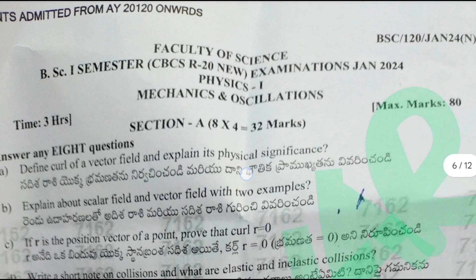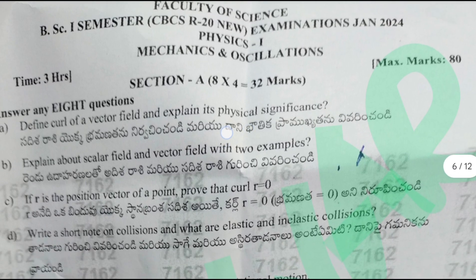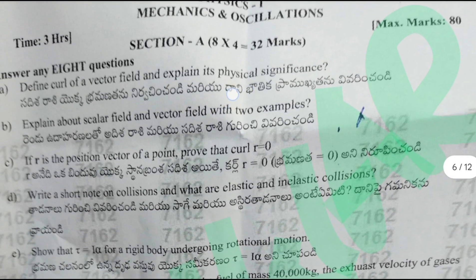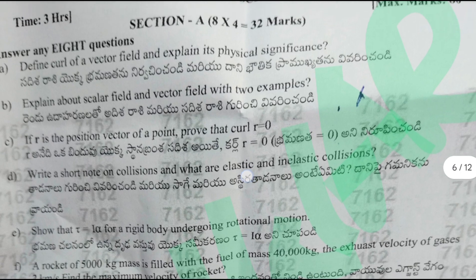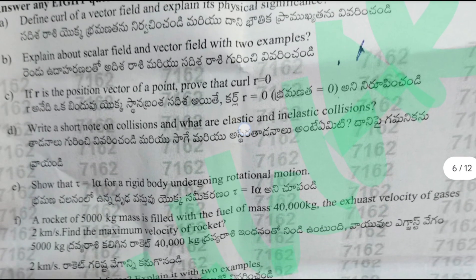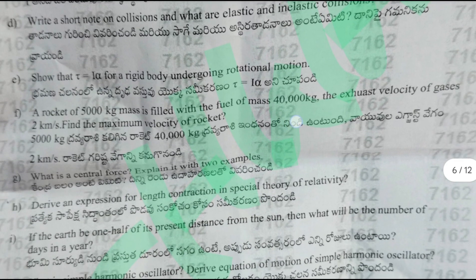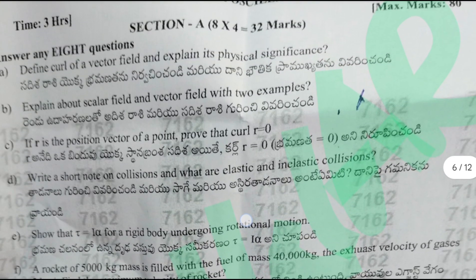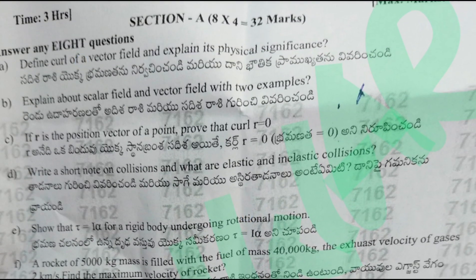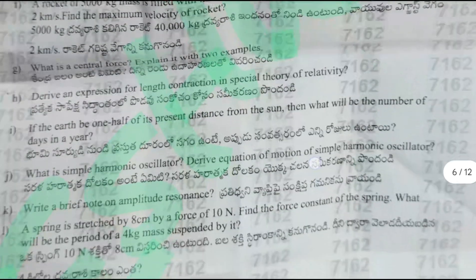Let's check — the paper is divided into Section E and Section B. In Section E, we have to attempt 8 questions. Each question carries 4 marks, for a total of 32 marks.